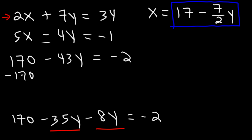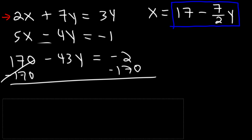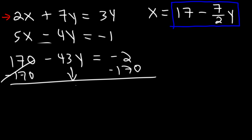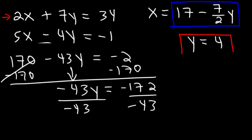Subtract 170 from both sides: negative 43y equals negative 2 minus 170, which is negative 172. Divide both sides by negative 43, and we get y is equal to 4.